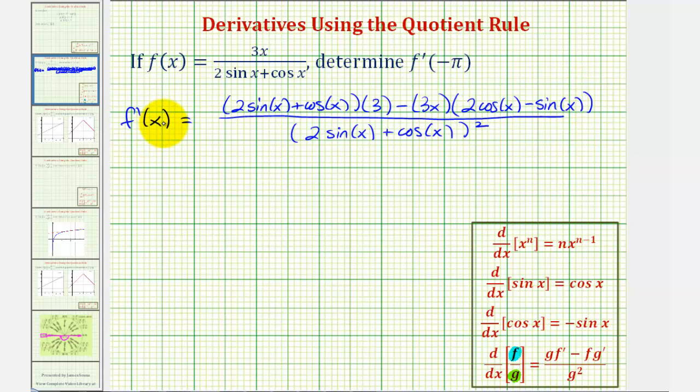So this would be our derivative function, and because we're trying to evaluate this at negative pi, we're not going to simplify this, so we'll now substitute negative pi for x.